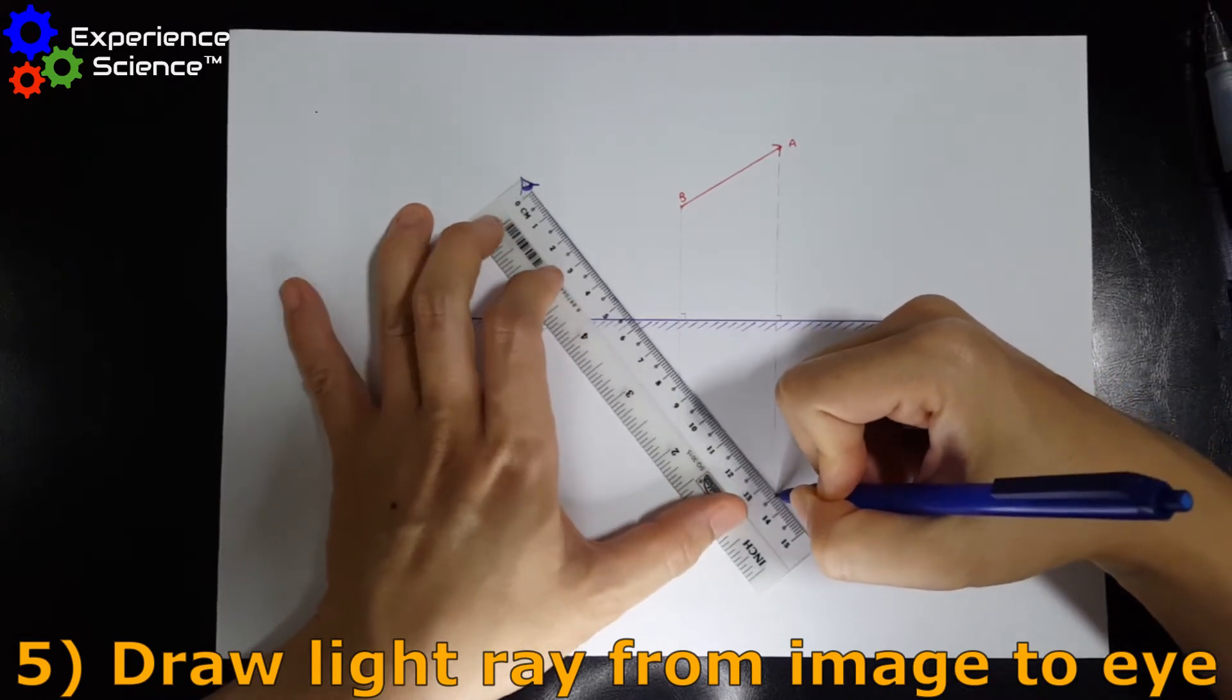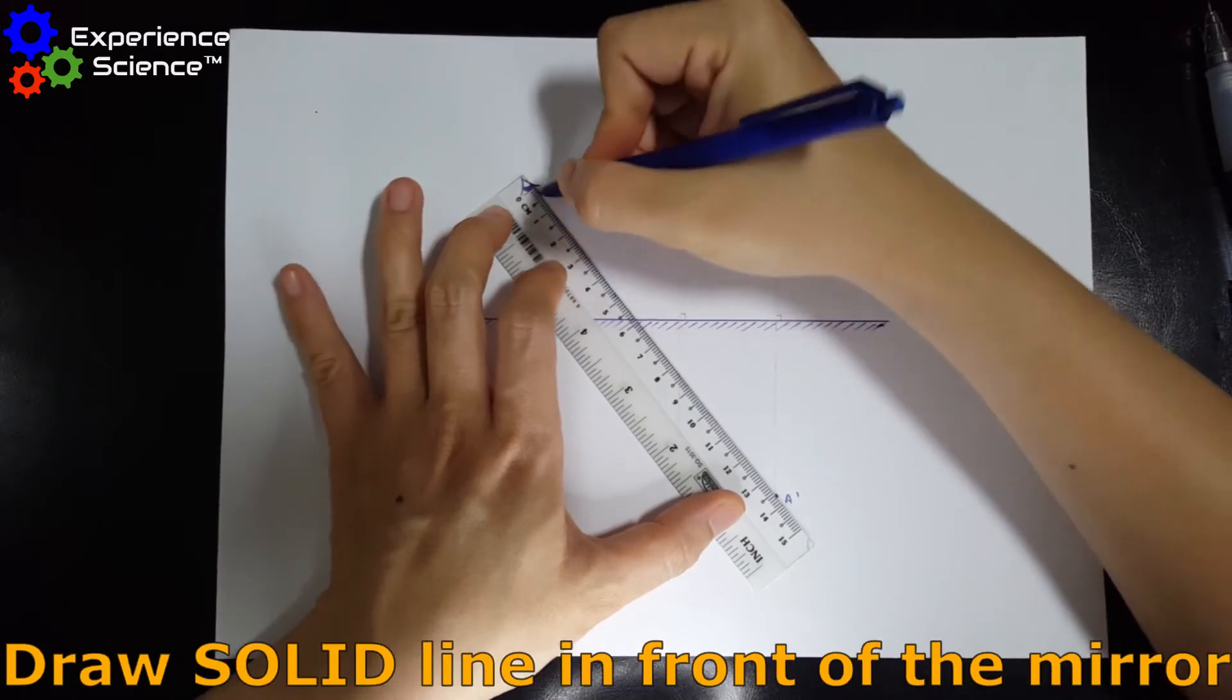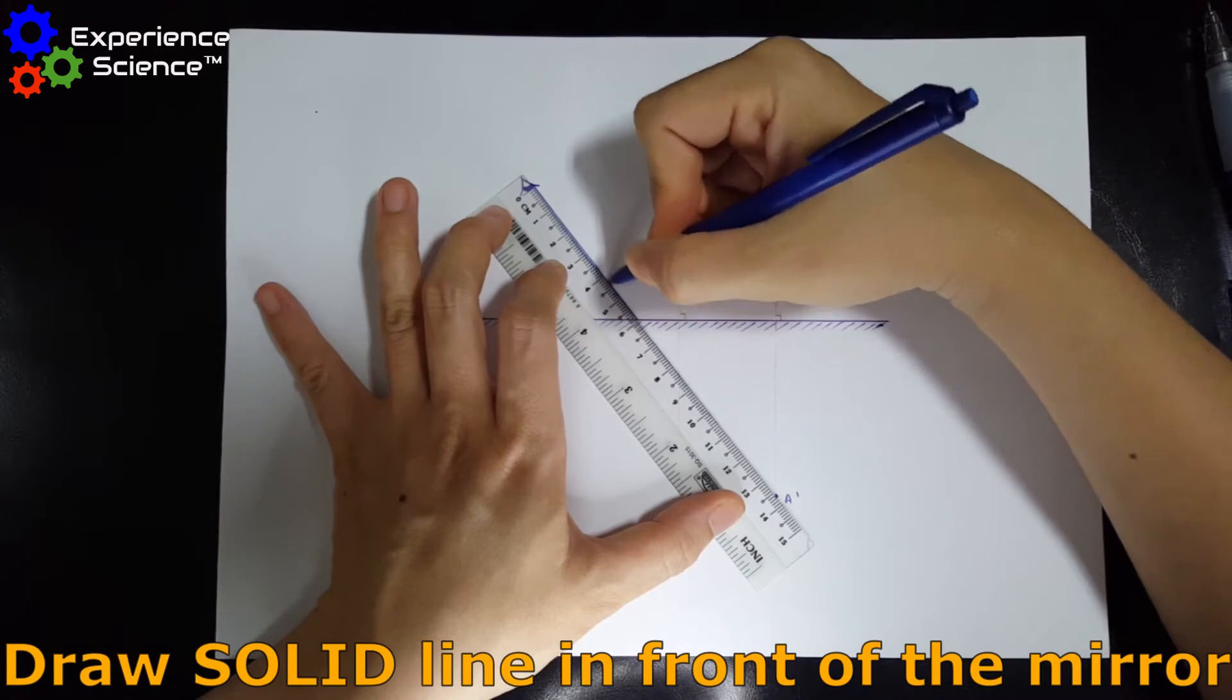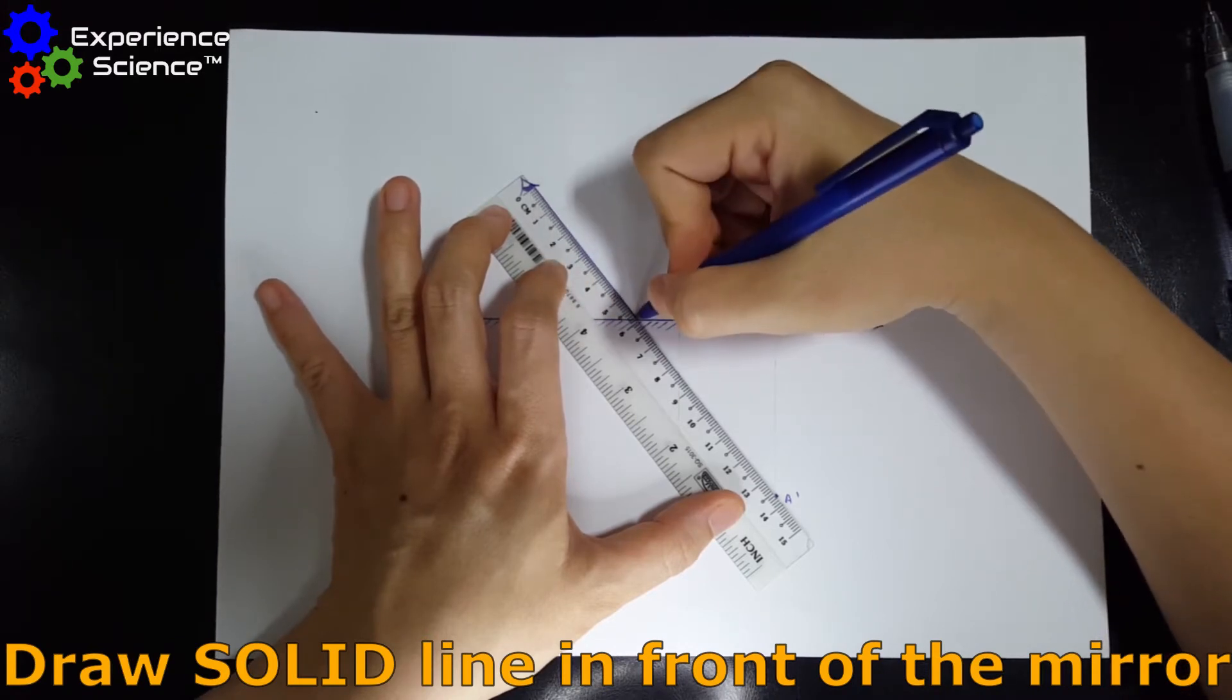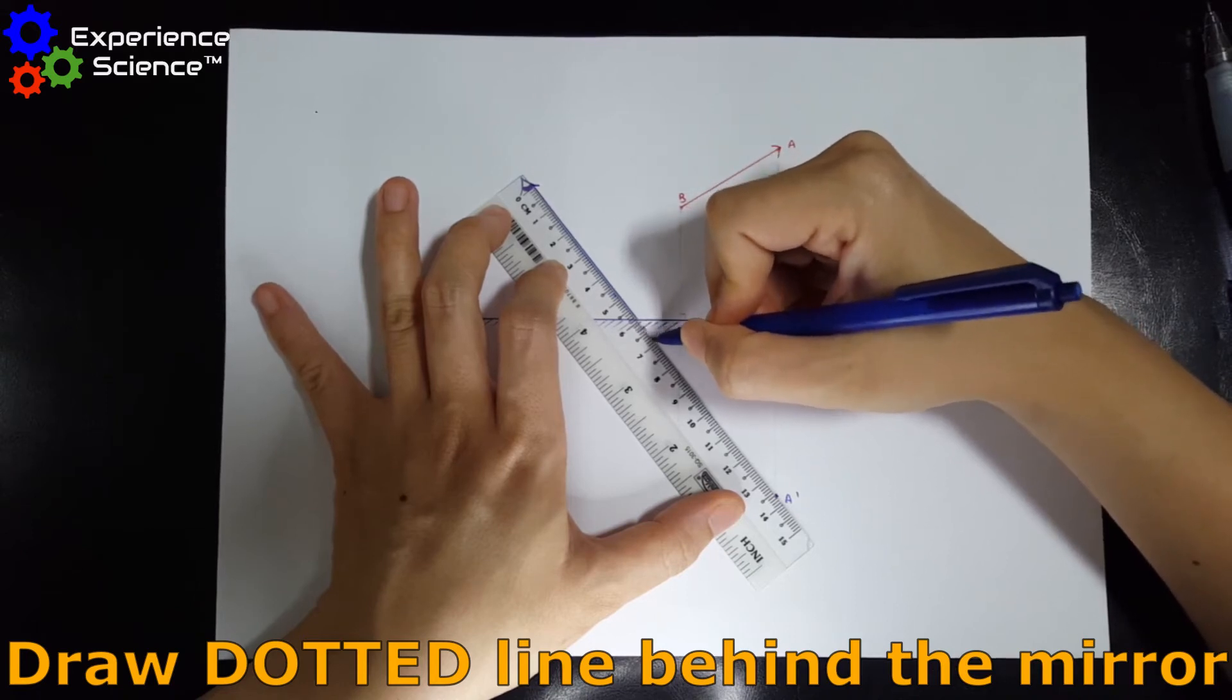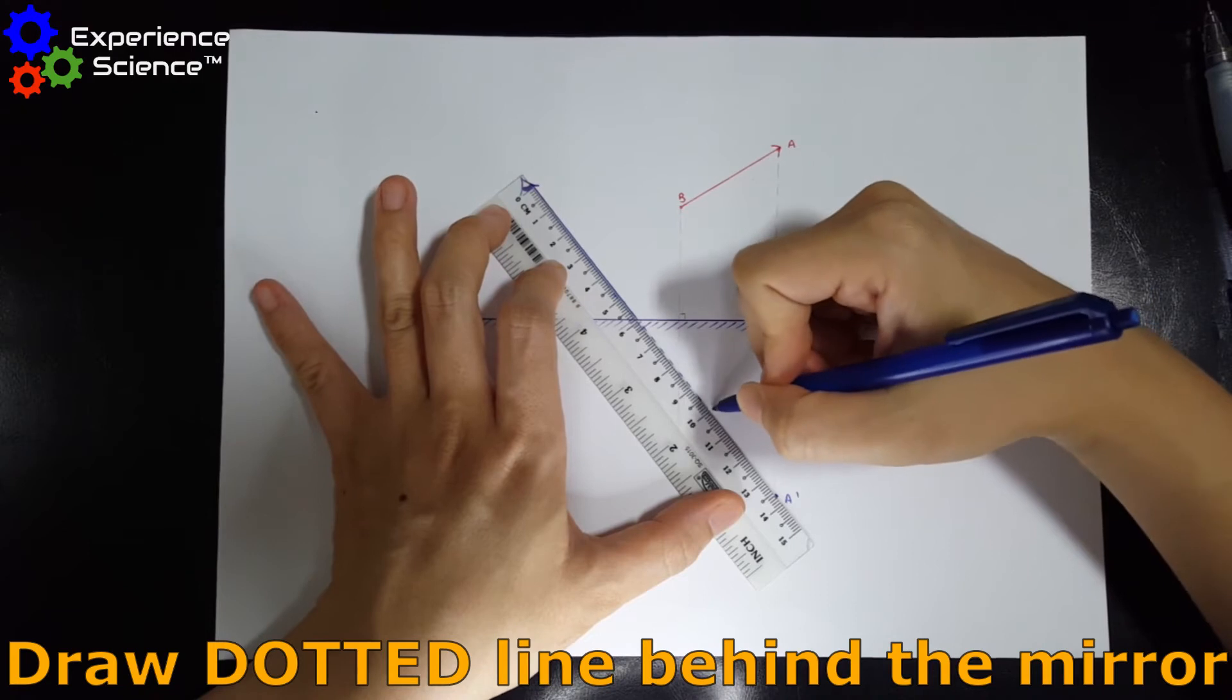First, you join this line to the edge of the eyeball and you draw a straight line until you reach the mirror. Now take note, once you reach the mirror, you have to do dotted lines because the light rays behind the mirror are not real. They are virtual. So this is what we do.